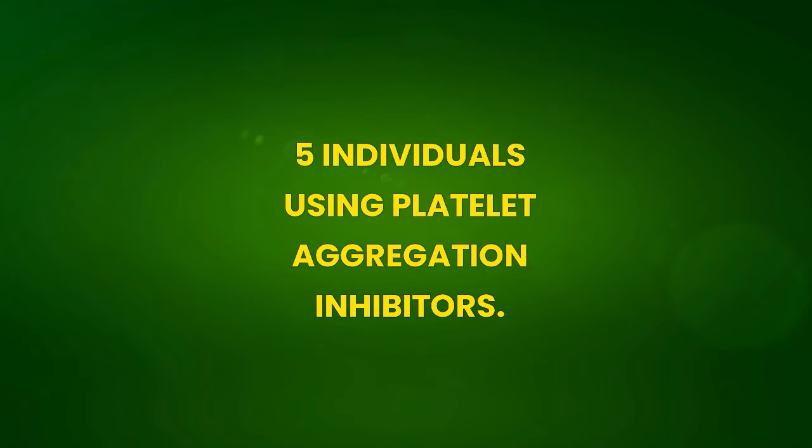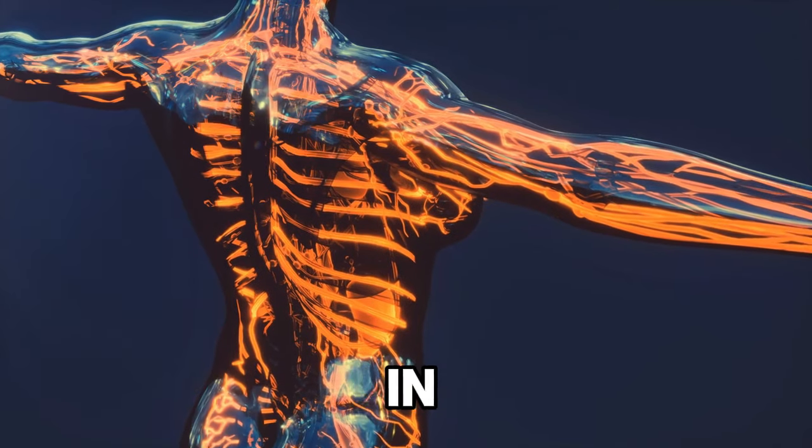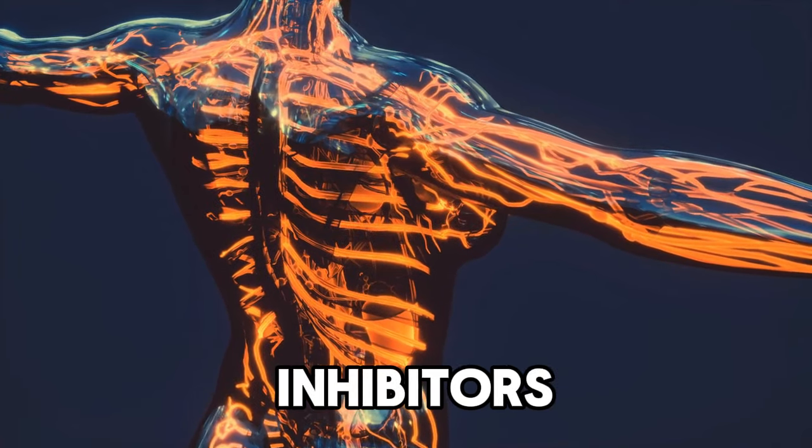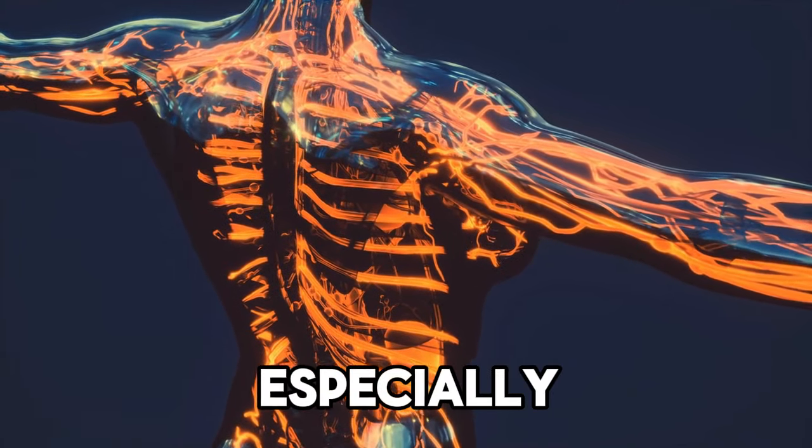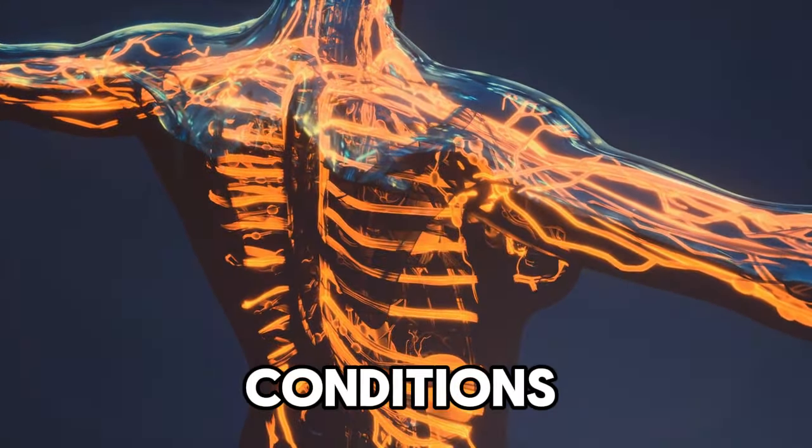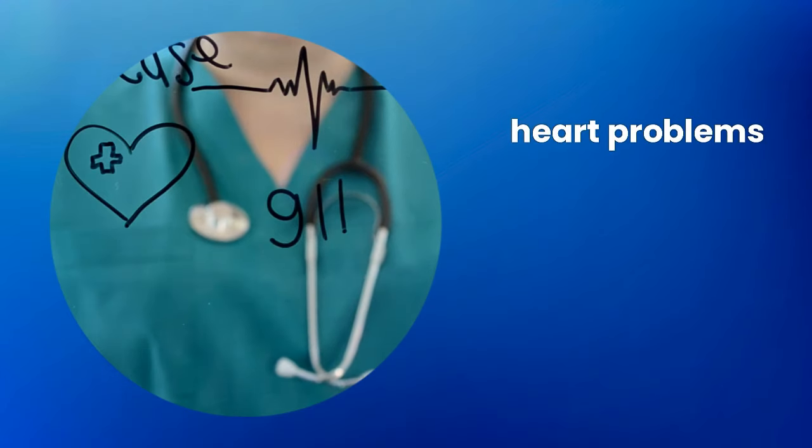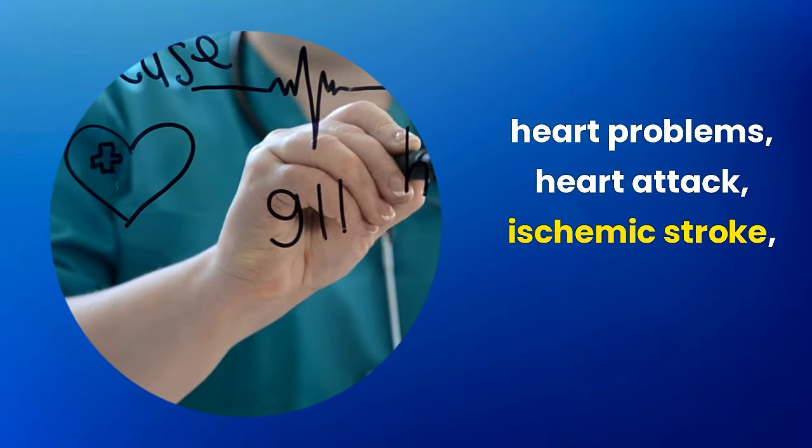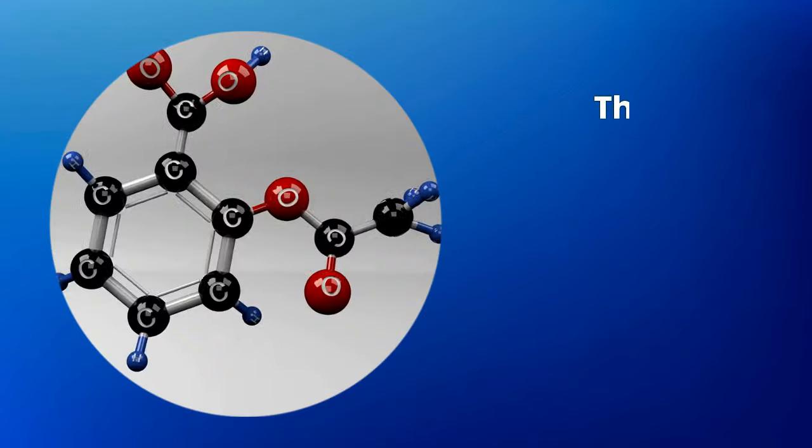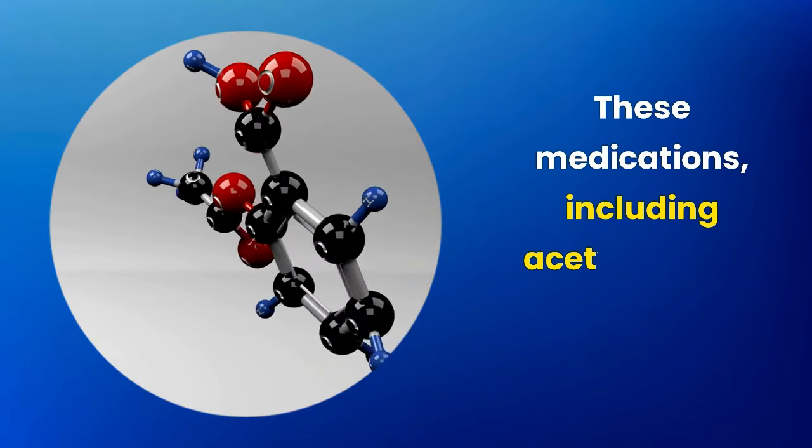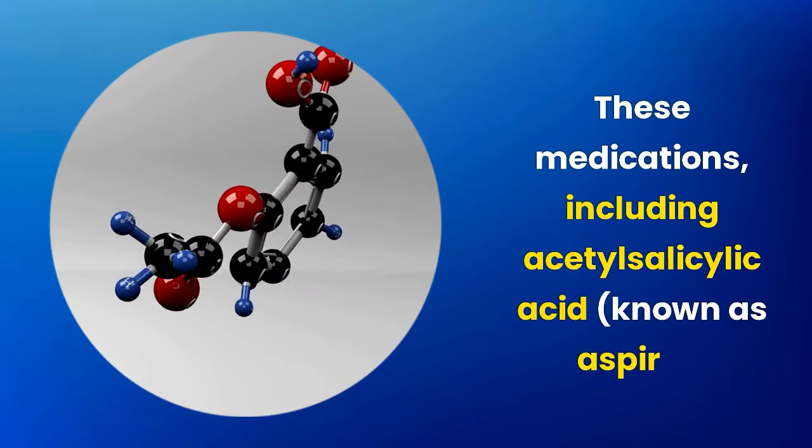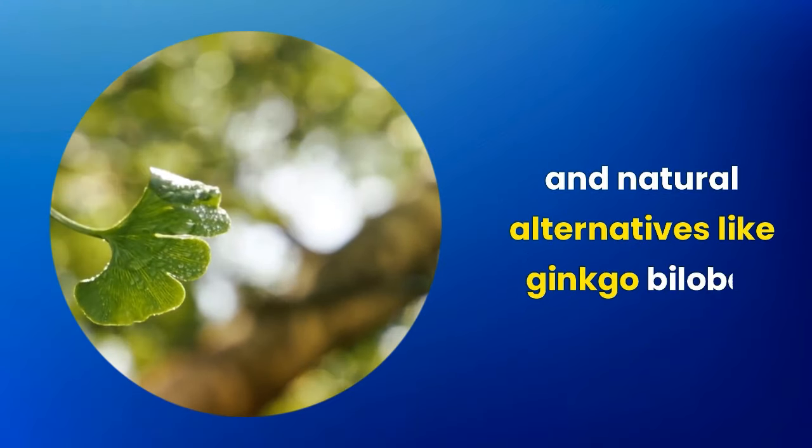5. Individuals using platelet aggregation inhibitors. Care in the use of platelet aggregation inhibitors is crucial, especially for individuals with a history of conditions like thrombosis, heart problems, heart attack, ischemic stroke, or carotid obstruction. These medications, including acetylsalicylic acid, known as aspirin, and natural alternatives like ginkgo biloba, play a vital role in preventing complications related to blood clotting.